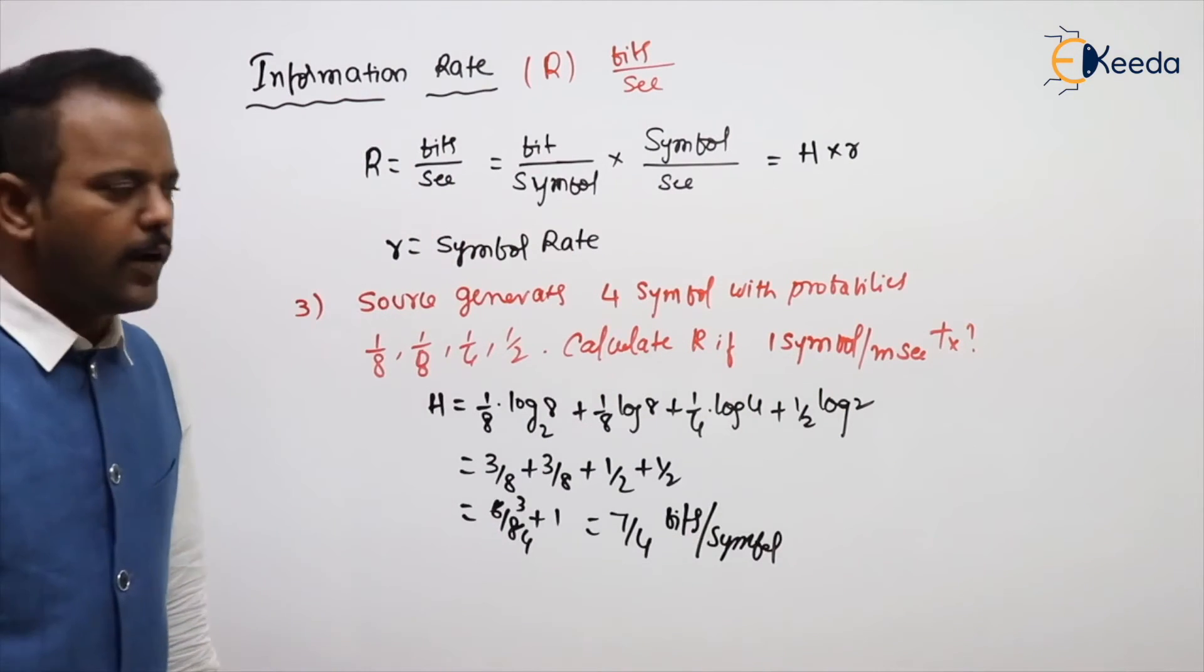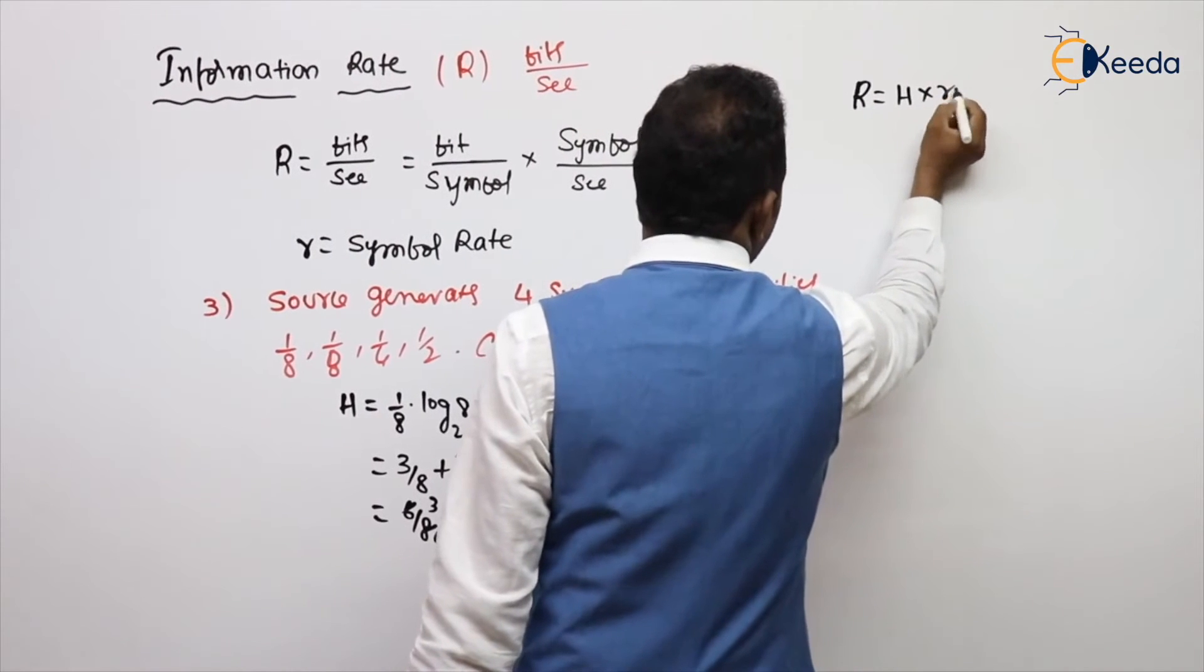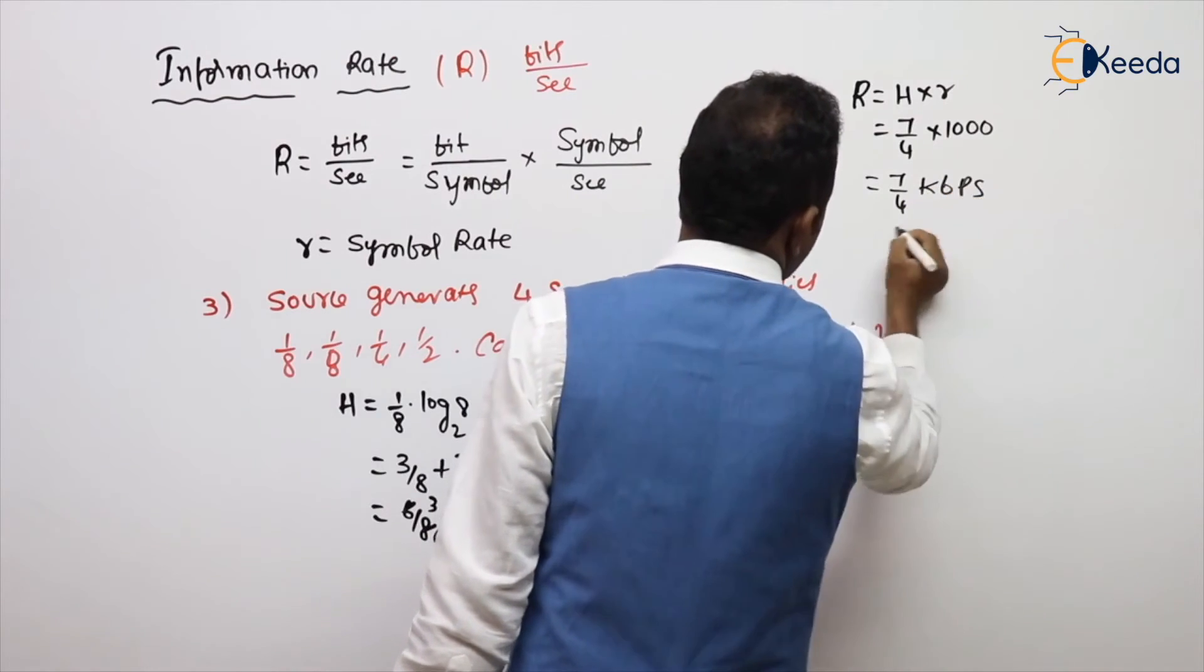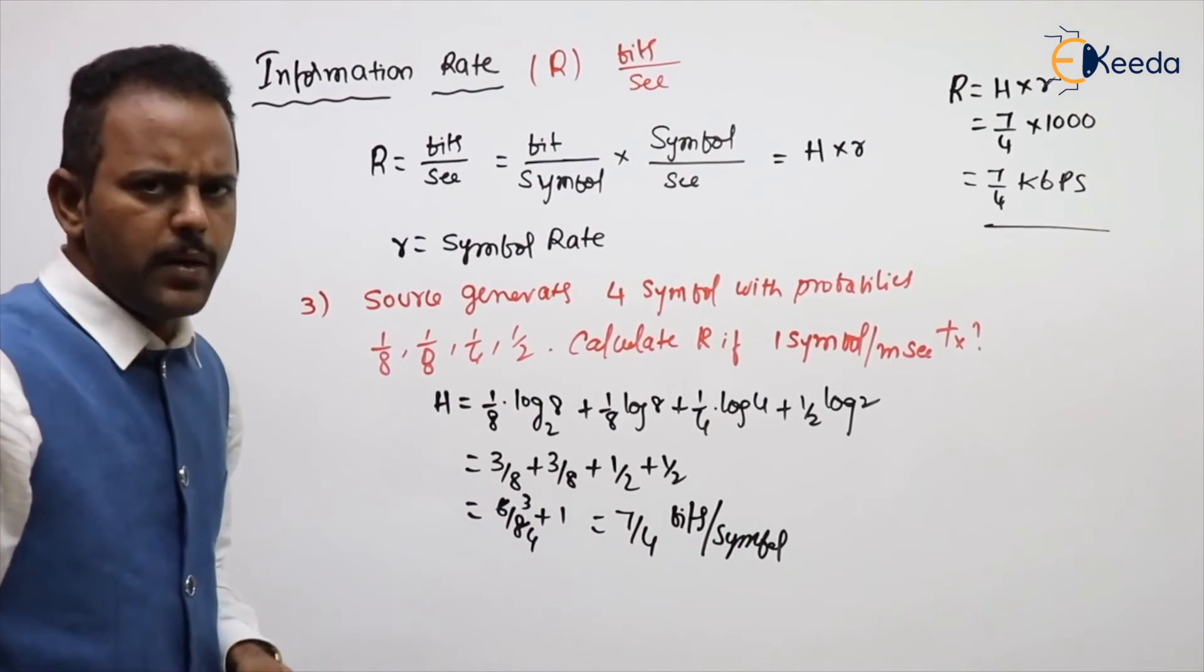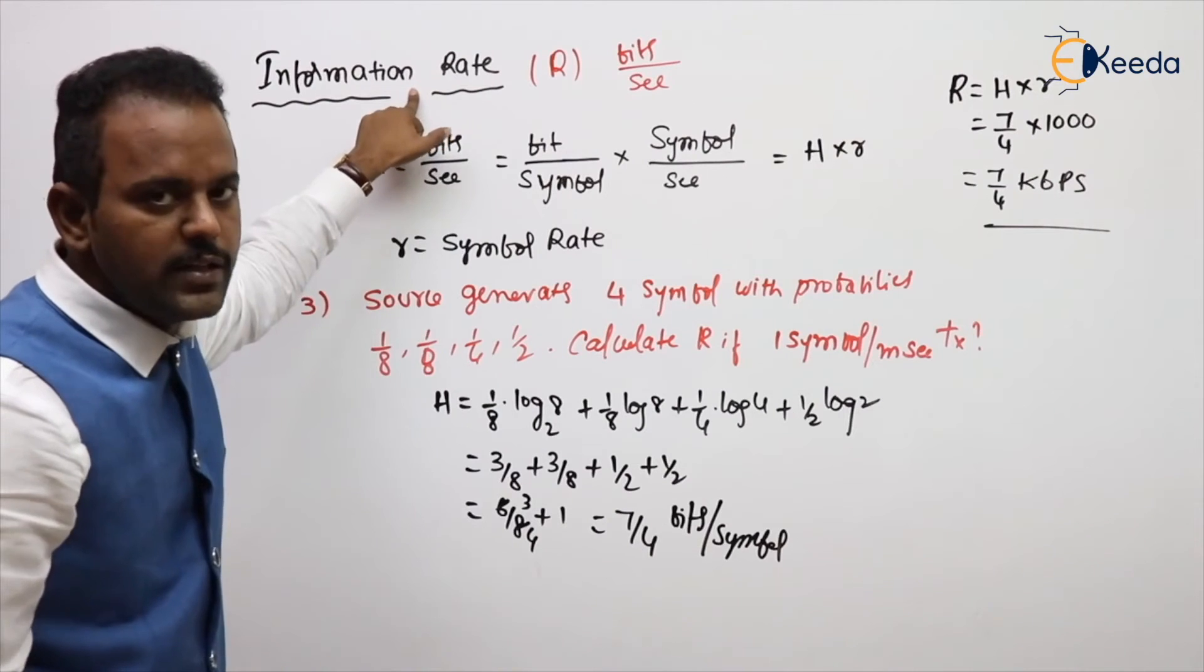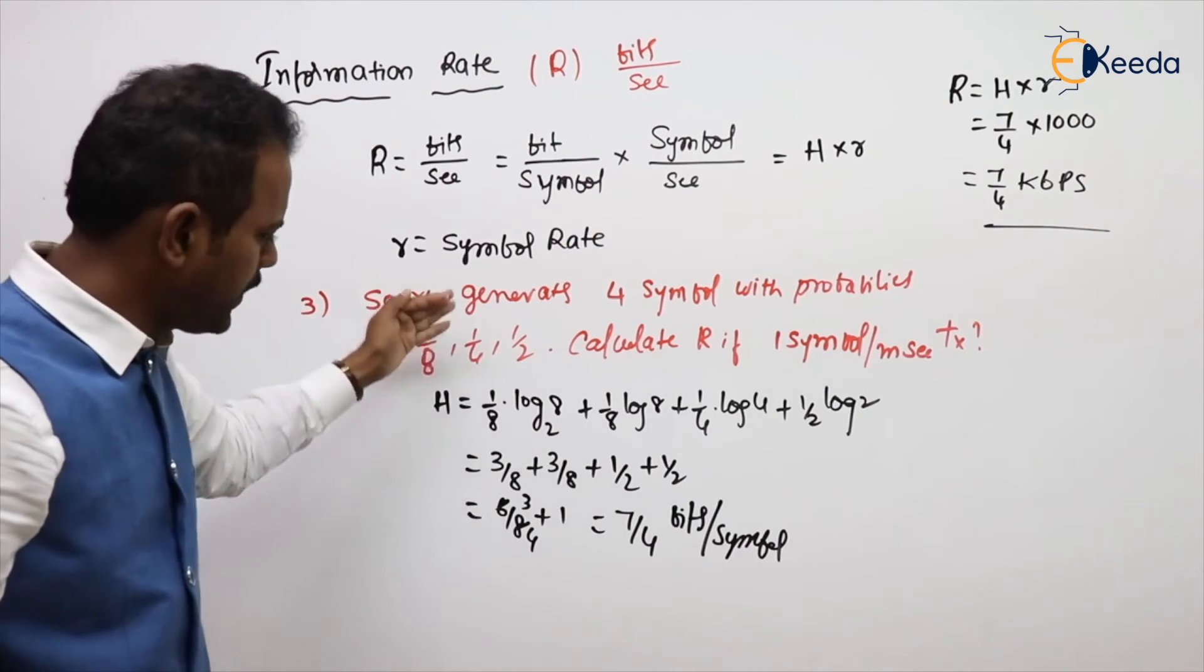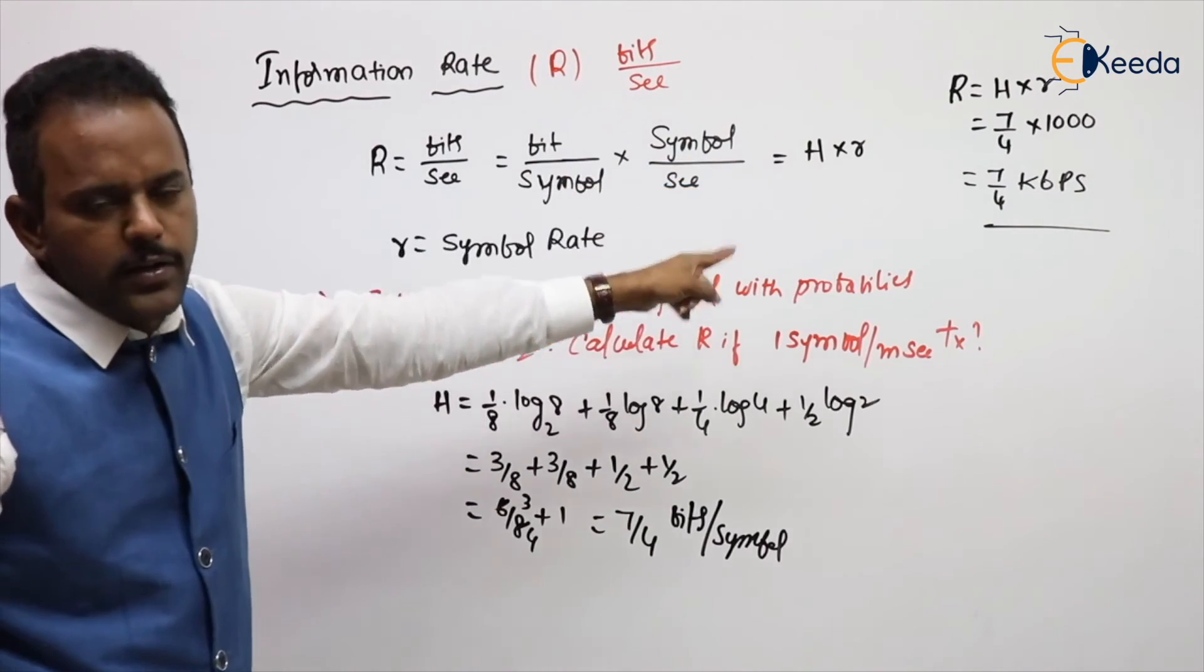Now, then what is the information rate R? H into small r. H value we got here 7/4 into small r value is 1000. So 7/4 kilobits per second, 1.75 you can also write. Here these are the basic model of problems asking from information rate. In the GATE examination you can see previous GATE problems on information theory. What is the information rate? Simple H into small r, symbol rate. If any problem is given, first calculate entropy and they might be given the small r value, substitute you will get the answer.